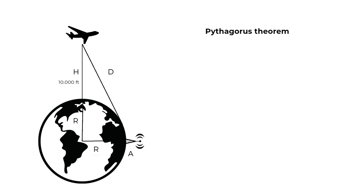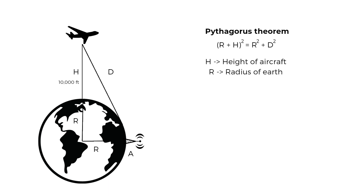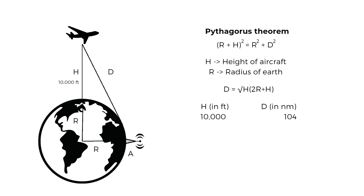Applying the Pythagorean theorem, we get: (R + h)² = R² + d², where h is the height of the aircraft and R is the radius of the earth. Solving this equation for the line-of-sight distance, we get: d = √(h × (2R + h)), which gives us the line-of-sight distance at minimum altitude. If an aircraft is flying at 10,000 feet, the minimum distance for line-of-sight communication is approximately 104 nautical miles. As the height of the aircraft increases, the distance also increases. To go beyond the horizon, you would need to bounce the HF signal off the ground, water, or the ionosphere.